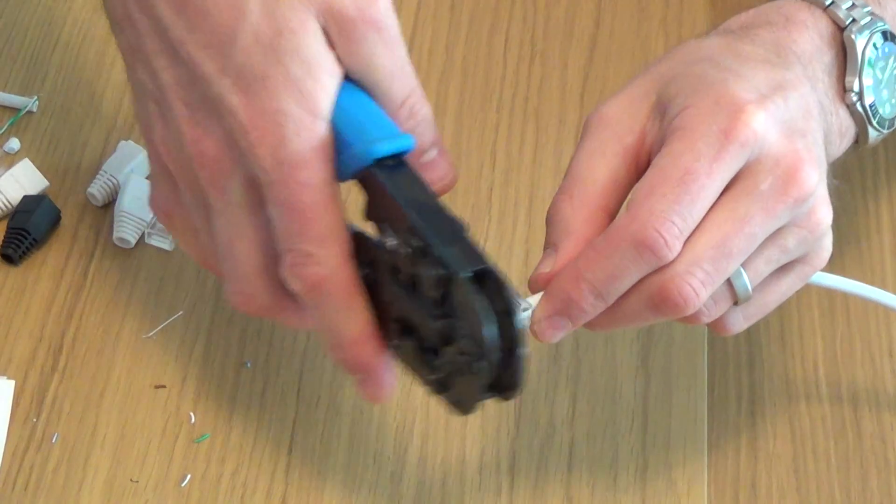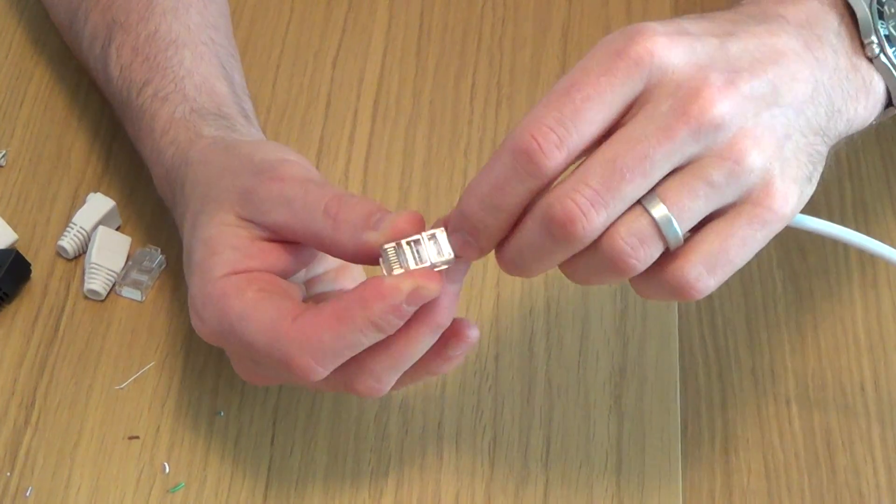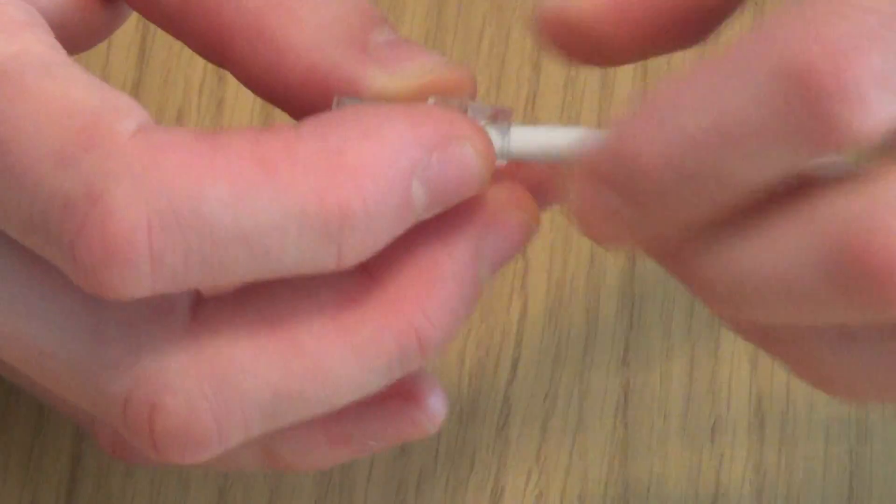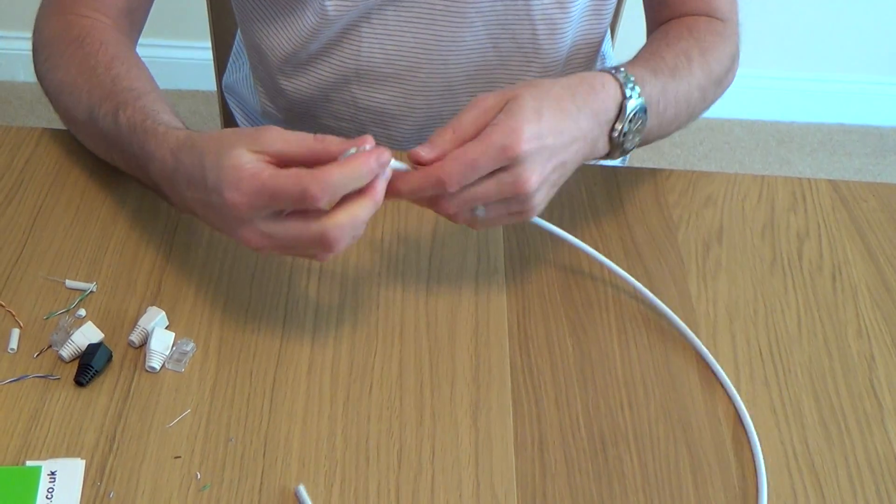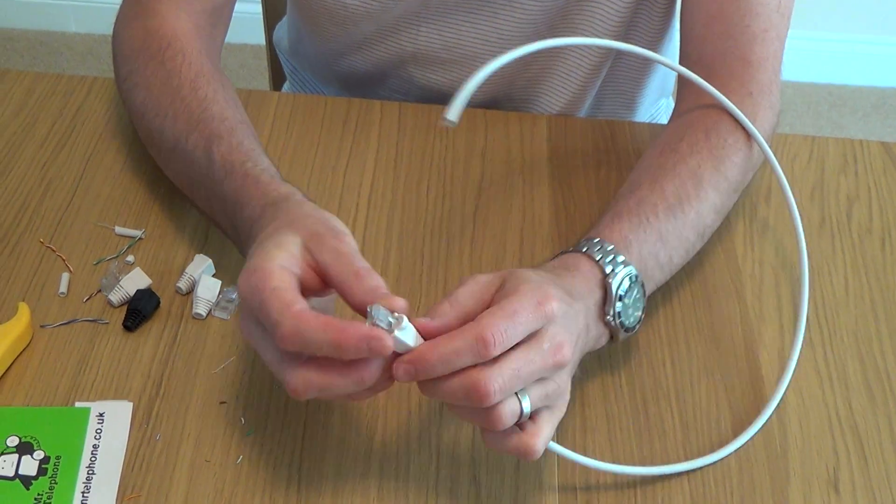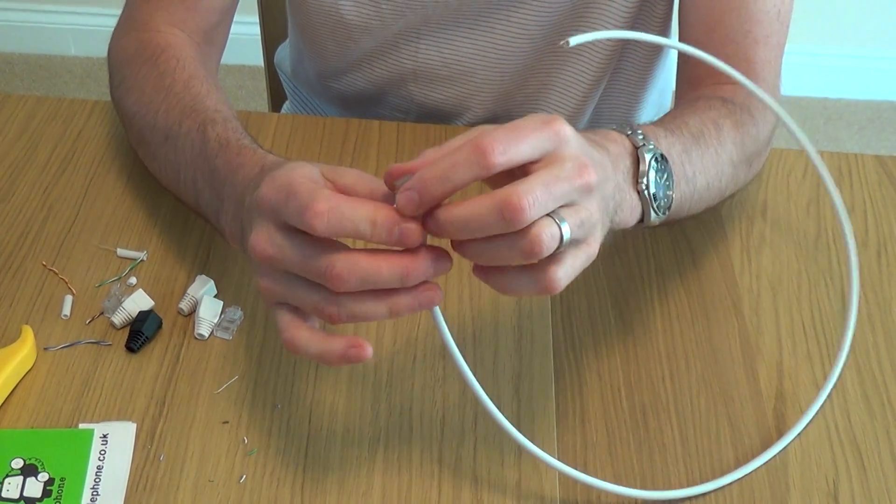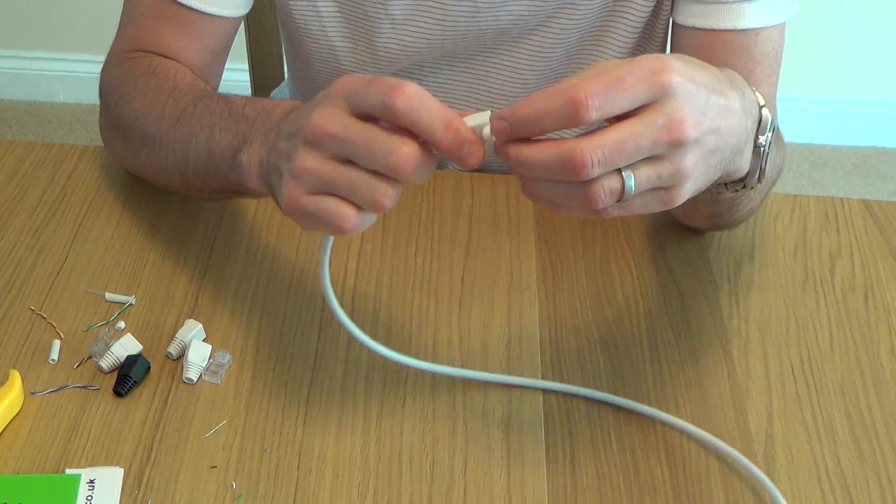And then, that's it. That little bit gets pushed down there and that holds onto the cable to stop it coming out. And you plug your boot onto the end. And that's it. That's how you do an RJ45 plug.